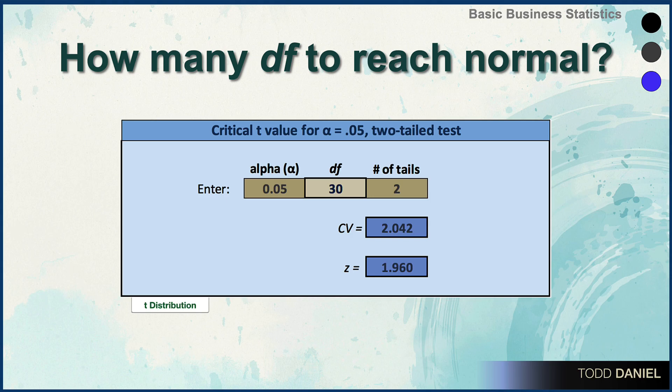Increase the degrees of freedom to 100. Now our critical value is 1.98, just two one-hundredths of a point away from a normal curve.